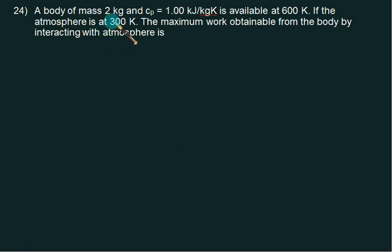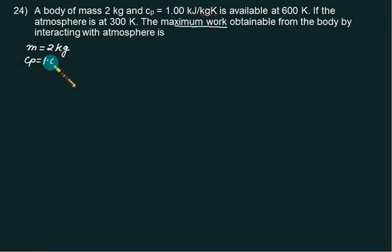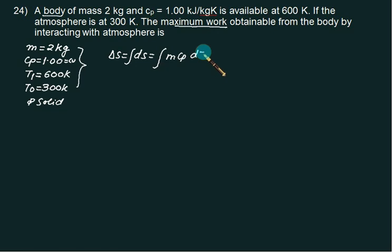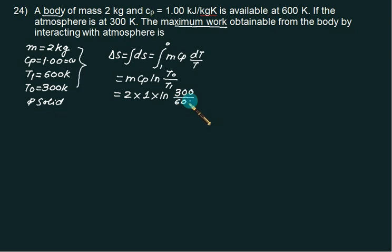We are given a body of mass 2 kg with Cp equal to 1 kJ per kg per Kelvin, available at 600 Kelvin. Atmospheric temperature is 300 Kelvin and we have to calculate maximum work obtained. Since mass is given, this is a finite capacity problem. We model it as a solid, so Cp equals Cv. We have ΔS equal to the integral of m·Cp·dT/T, giving m·Cp·ln(T0/T1). With mass 2, Cp 1, T0 300, T1 600, this gives minus 1.386 kJ per Kelvin.